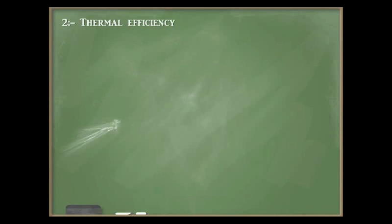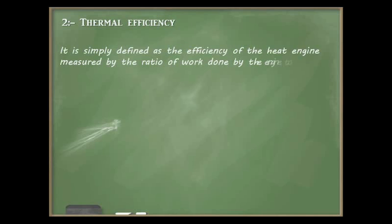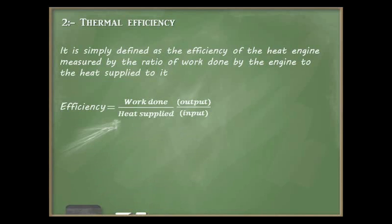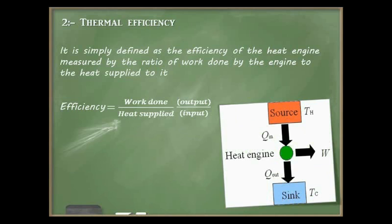Next is thermal efficiency. It is defined as the efficiency of a heat engine measured by the ratio of work done by the engine to the heat supplied to it — that is, efficiency = work done / heat supplied (output / input). In our case, heat supplied (q_in) is the combustion process inside the cylinder due to the spark plug, and work done equals heat supplied minus heat rejected.